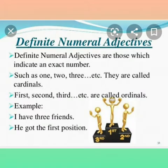Definite numeral adjectives are those which indicate an exact number, such as 1, 2, 3, etc. They are called cardinals. 1st, 2nd, 3rd, etc. are called ordinals. For example: I have 3 friends. He got the first position. Here, 3 and 1st denote the exact number.